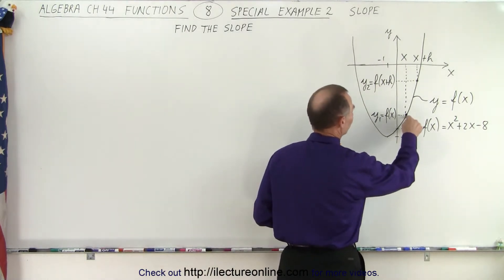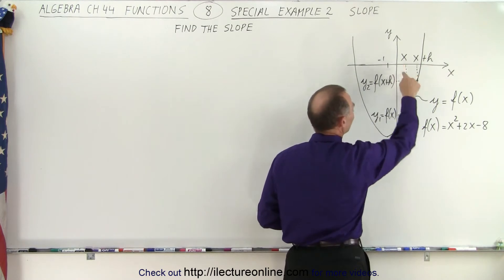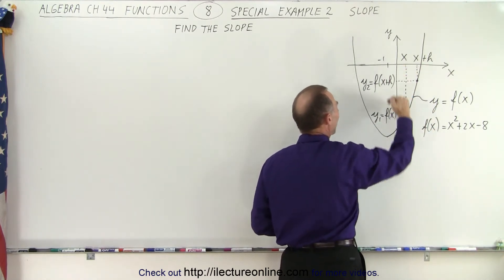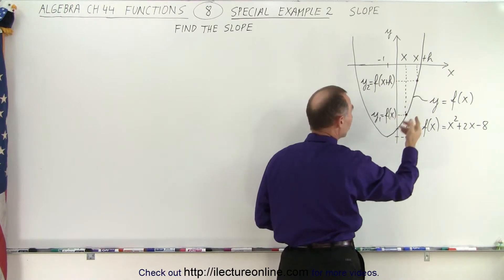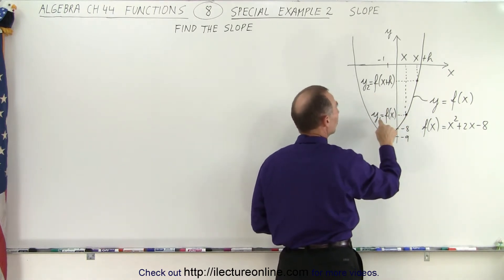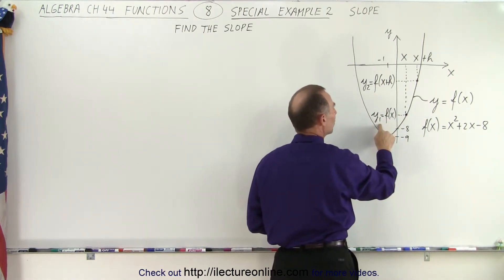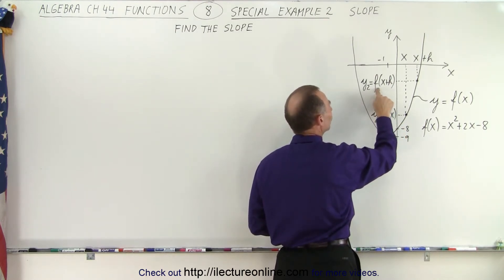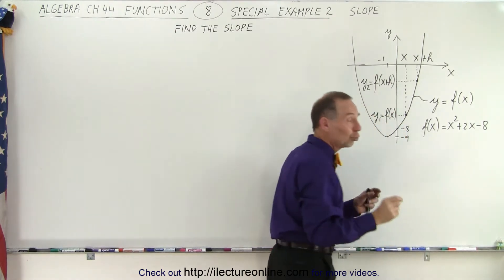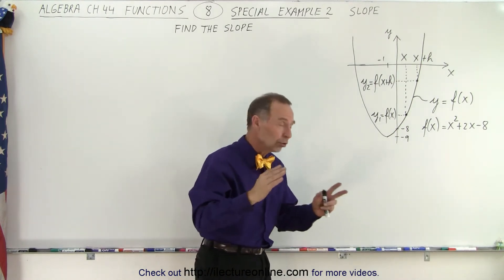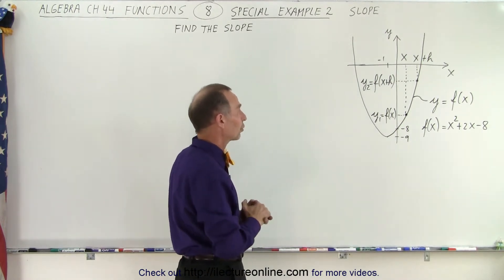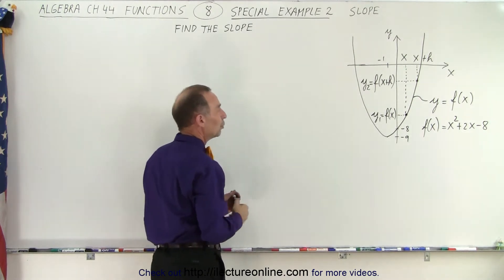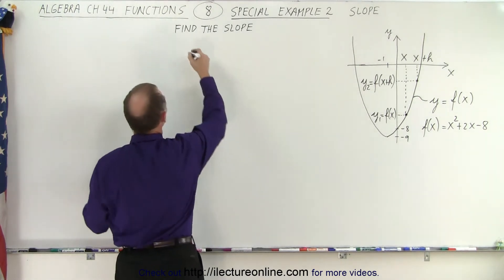We pick two points: our first point on the curve which is x, and our second point which is x plus h. The two corresponding y values of those two points — the y coordinates, y1 and y2 — where y1 is the function evaluated at x and y2 is the function evaluated at x plus h, the two values for the two x coordinates of the two points on the curve. So the slope is what we're looking for.